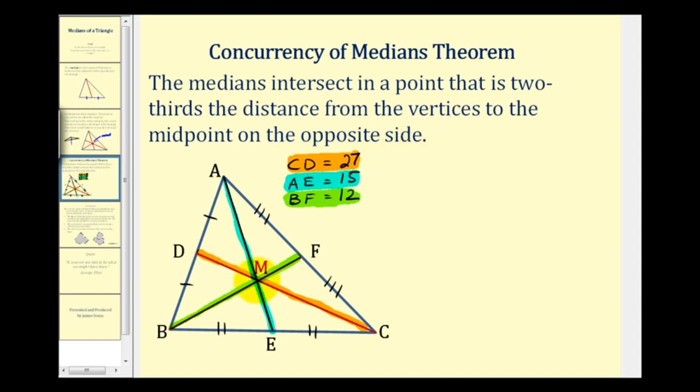And we now know that point is the centroid. So if we take a look at the median CD, if we know the length is 27 units, CM would be two-thirds the total distance. Well two-thirds of 27 would be 18, leaving one-third of the distance for the segment MD. And that would be nine.